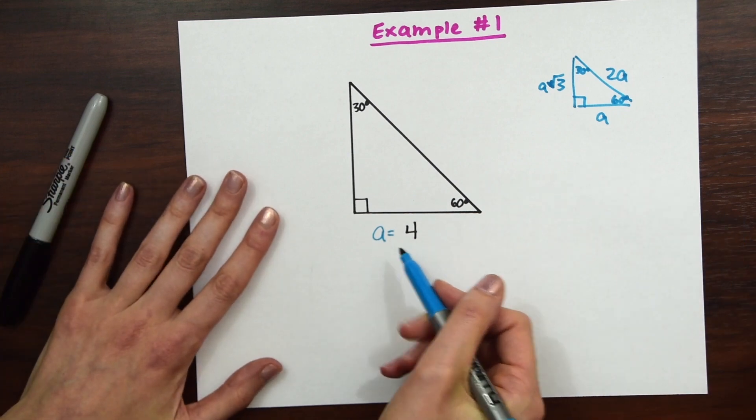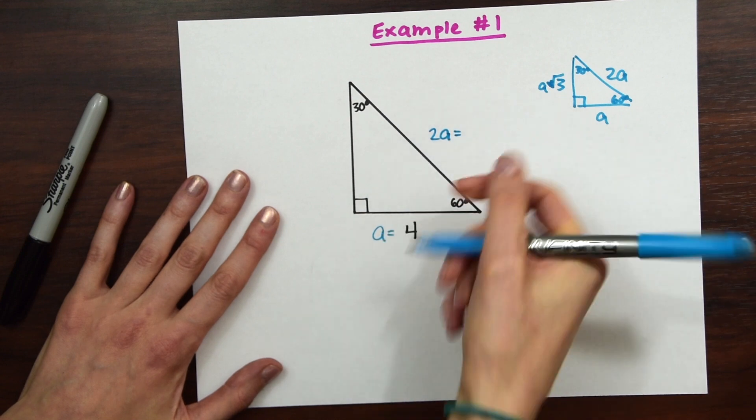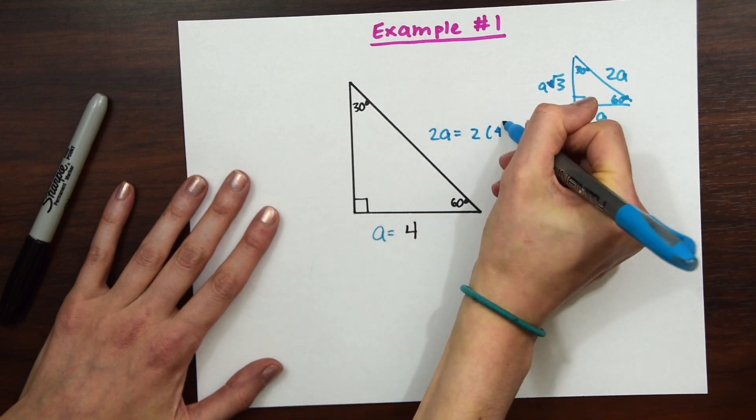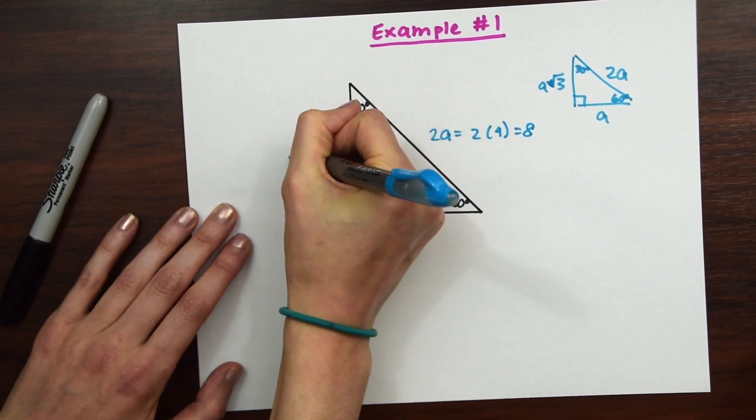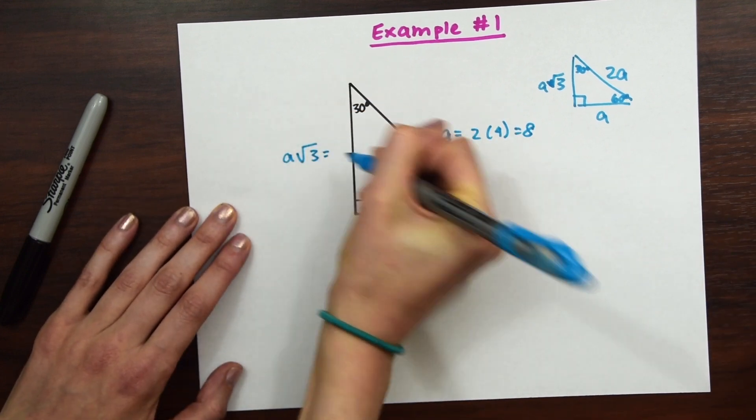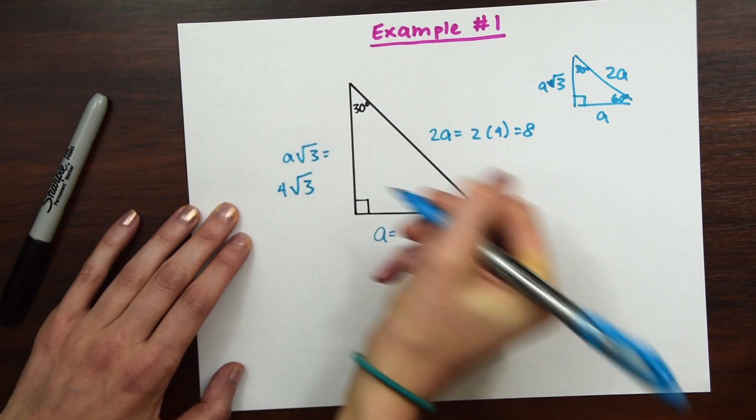So since they give us A, we can find 2A really easy. So 2A is just 2 times A, which is 4, so this is just going to be 8. And then over here, the other leg, we have A rad 3, and since A is 4, this is just equal to 4 rad 3. So that's our answer.